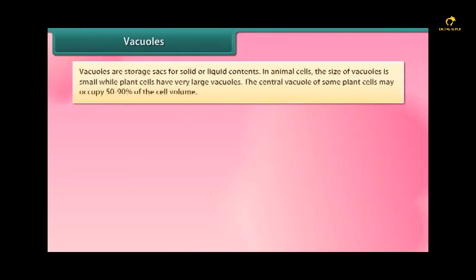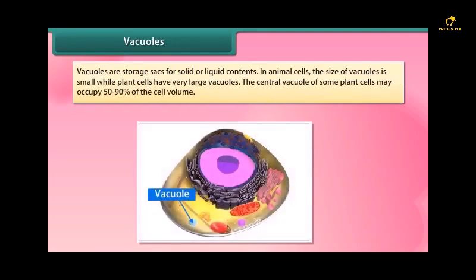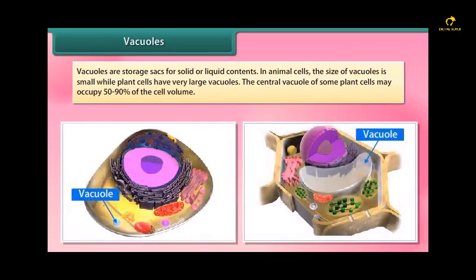Vacuoles are storage sacks for solid or liquid contents. In animal cells the size of vacuoles is small while plant cells have very large vacuoles. The central vacuole of some plant cells may occupy 50 to 90% of the cell volume.